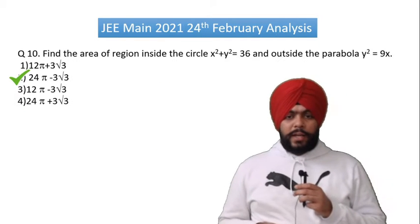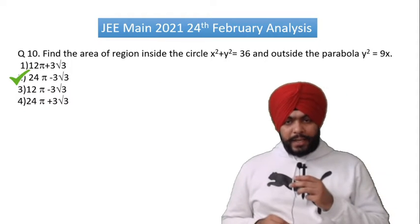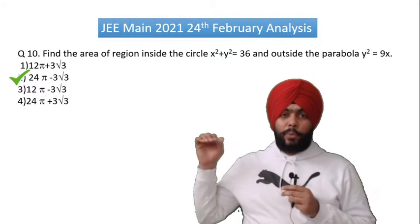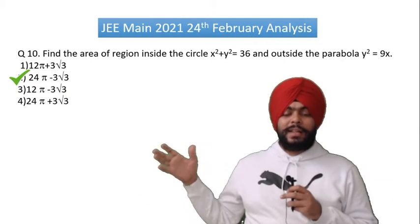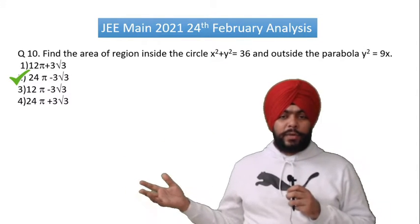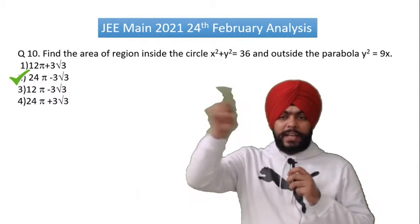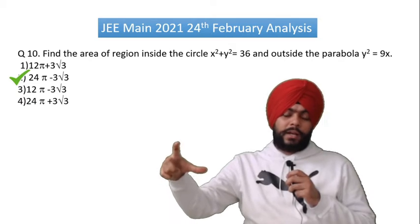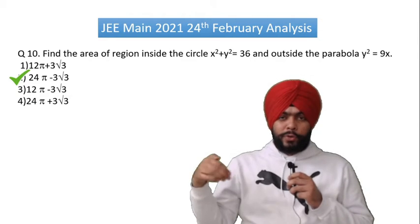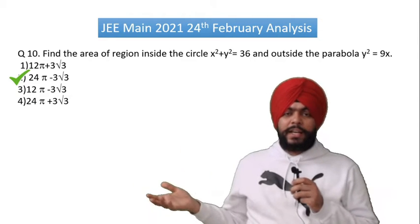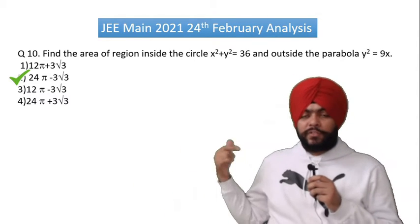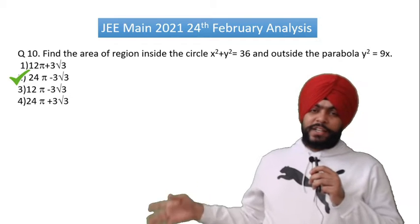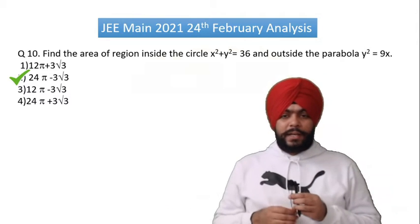Question number 10 is the area of a region inside the circle. Many people made mistakes because they had to take a specific part of the circle — some took the whole circle, some took the first quadrant, and some took the fourth quadrant. So this will definitely fall into medium level.